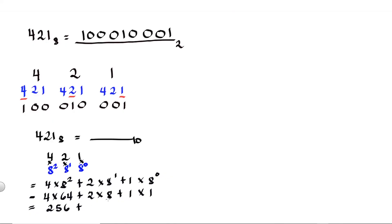So 4 times 64 equals 256, plus 2 times 8 equals 16, plus 1 times 1 equals 1. So 256 plus 16 is 272, plus 1 equals 273 decimal.